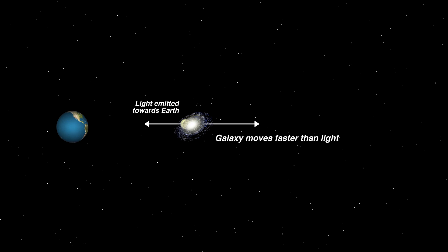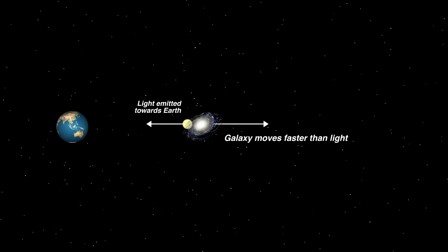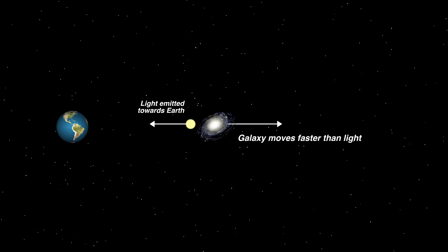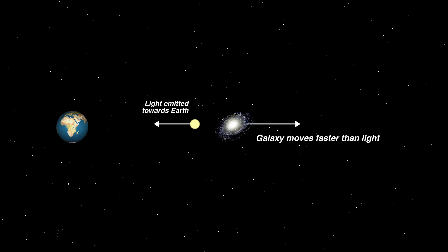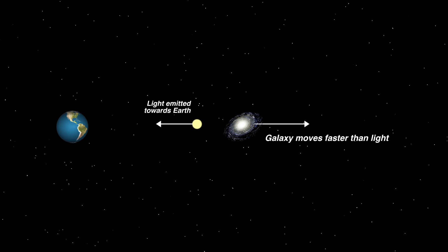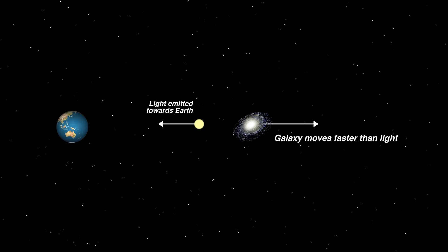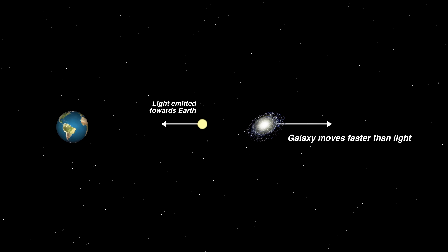Of course, it also means that we can never see them. If objects move away from us faster than light, then that means that light emitted by them can never get to our eyes. So we can never see light emitted by anything currently further away than 14 billion light years.